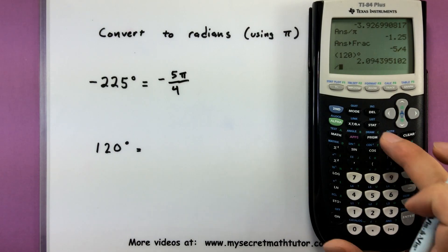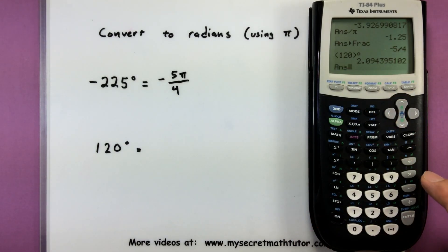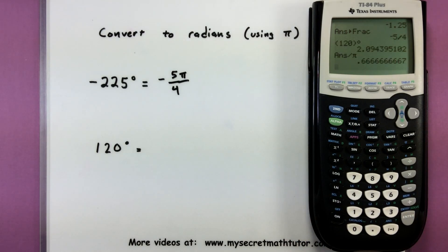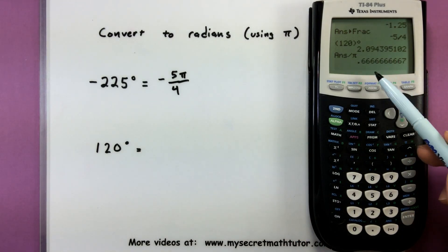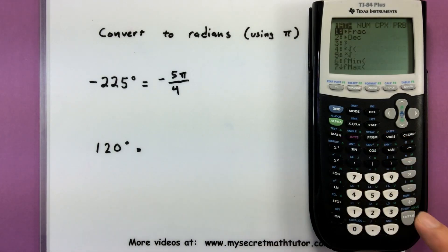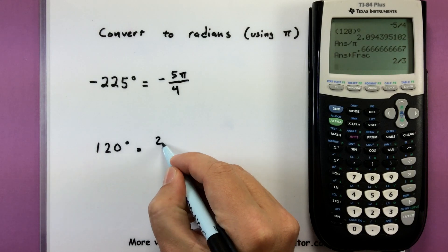Divide by answer, divide by π. There we are. Look at that, 0.666 repeating. That's two-thirds. Let's double check. Math, fraction. Sure enough, two-thirds. So this is equal to two-thirds.